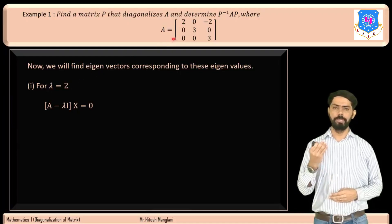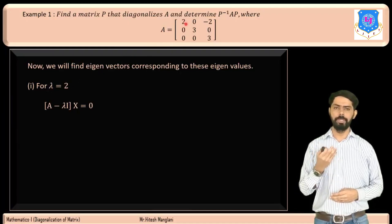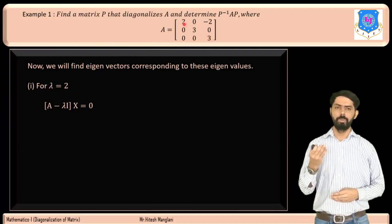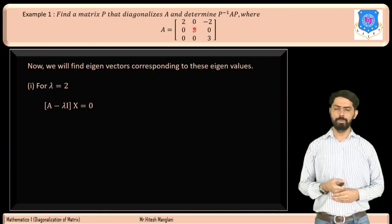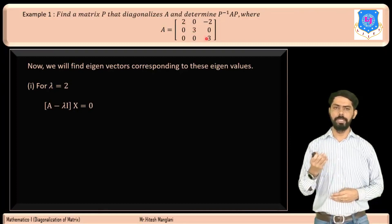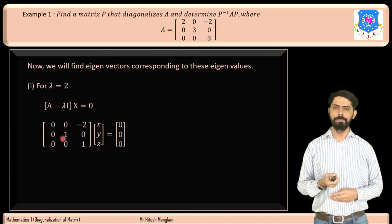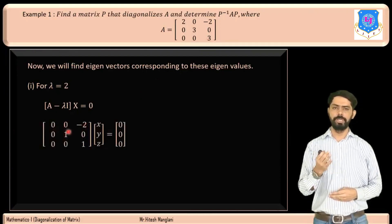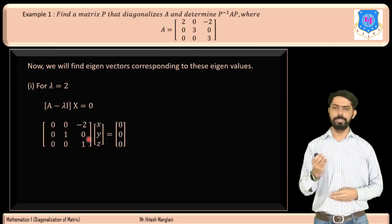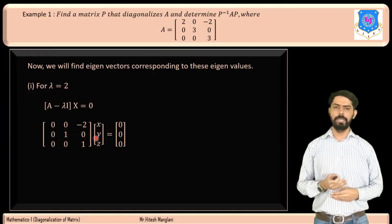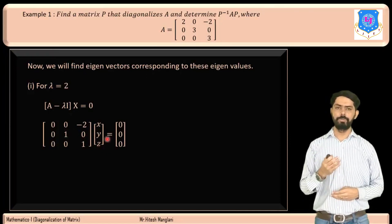Subtracting 2 from each diagonal element: 2−2 = 0, 3−2 = 1, 3−2 = 1. So the matrix A − 2I is [0, 0, -2; 0, 1, 0; 0, 0, 1], and (A − 2I)X = 0 gives the system [0, 0, -2; 0, 1, 0; 0, 0, 1][x, y, z]ᵀ = [0, 0, 0]ᵀ.